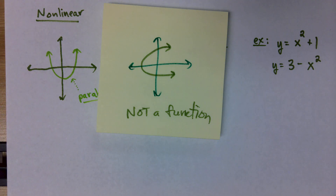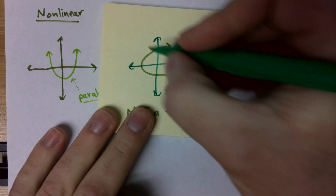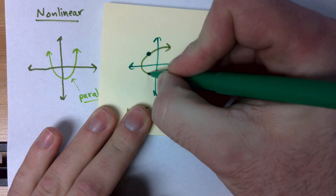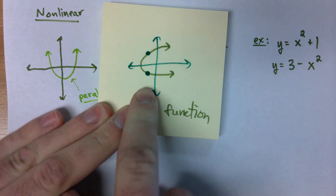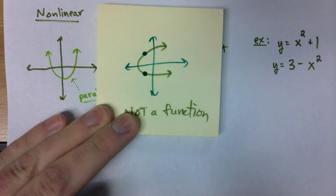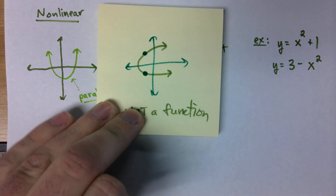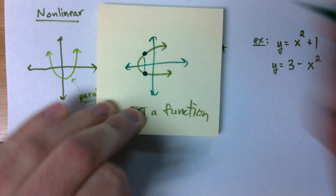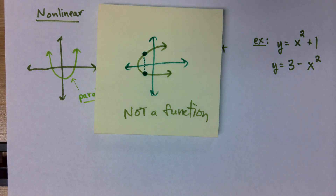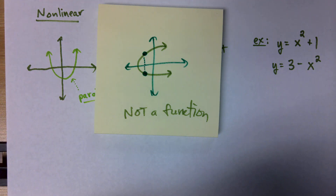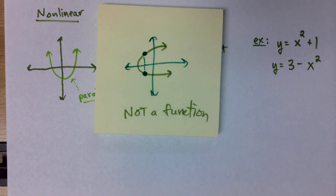Do you have an idea as to why that might not be a function? Because the lines both go over the same x values. That's right — exactly what we talked about yesterday. This parabola has two points on it with the same x value, so we have repeating inputs with different outputs. That's how we know this is not a function. And it's okay to have repeating outputs — that's fine. It's repeating inputs that's the problem.